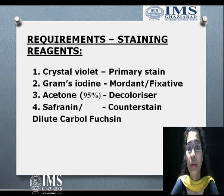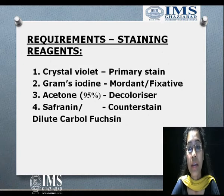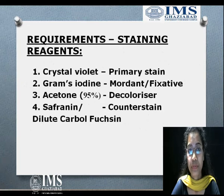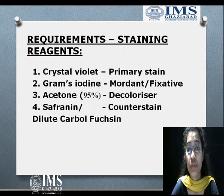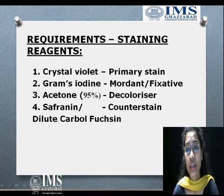Basic requirements: what are the reagents or requirements we use to stain bacteria? We use four types of reagents. First is crystal violet, which we use as a primary stain. Then next comes Gram's iodine, which is used as a mordant or fixative.